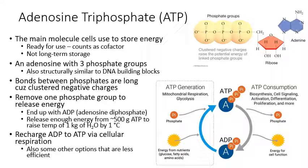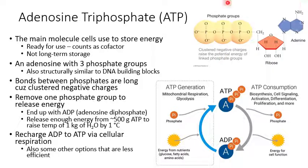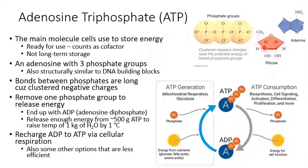ATP is an adenosine molecule that has three phosphate groups attached to it. In the image here, in blue and red you have the adenosine part, and in yellow you have the three phosphate groups. This is similar to NAD+: you have a nitrogenous base, a ribose sugar, and phosphates. NAD+ also has a nitrogenous base, a ribose, and some phosphates.